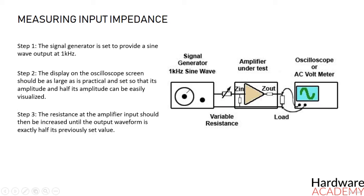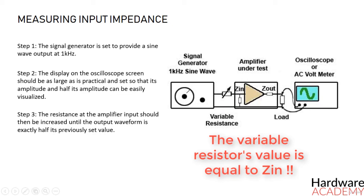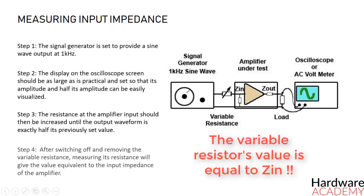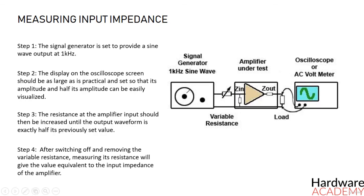Now you can switch off everything and remove the test resistance. Measuring the variable resistor with an ohmmeter gives the value equivalent to the input impedance of the amplifier.